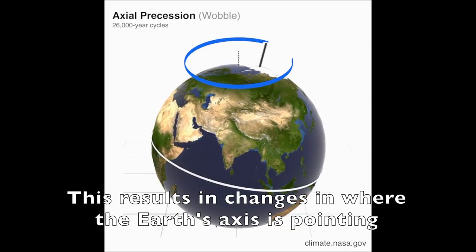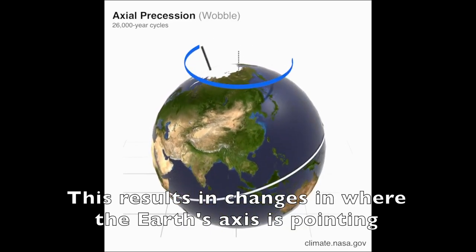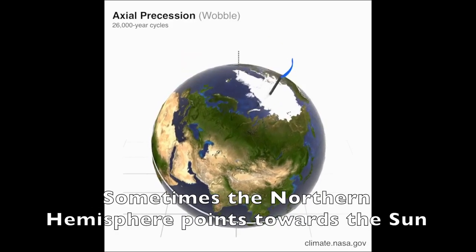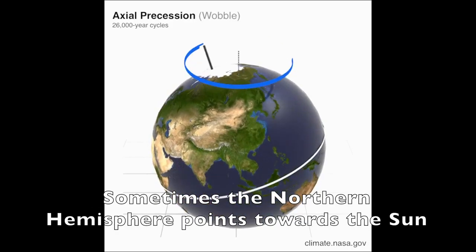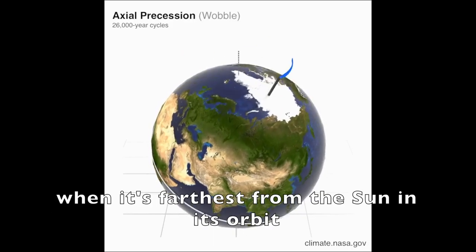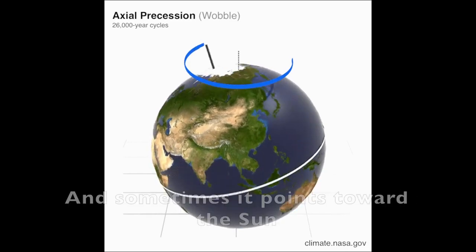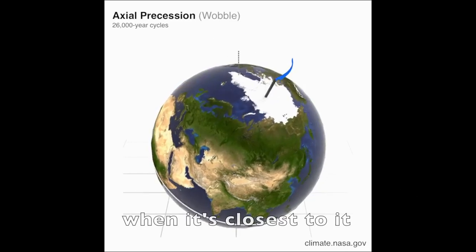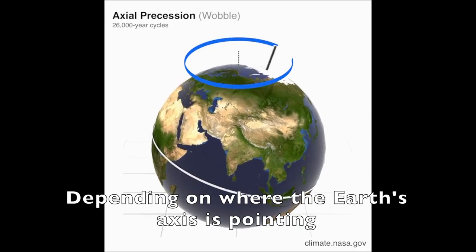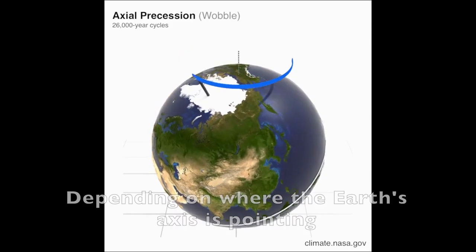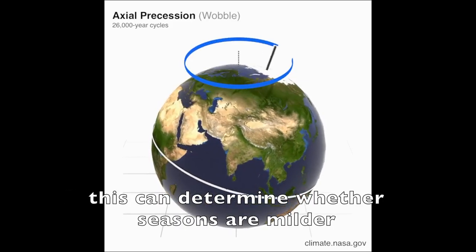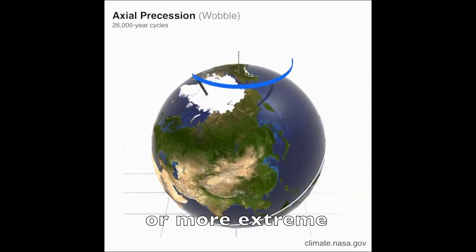This results in changes in where the Earth's axis is pointing. Sometimes the northern hemisphere points toward the Sun when it's farthest from the Sun in its orbit, and sometimes it points toward the Sun when it's closest to it. Depending on where the Earth's axis is pointing, this can determine whether seasons are milder or more extreme.